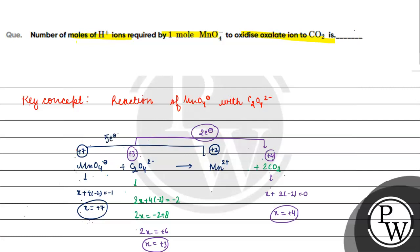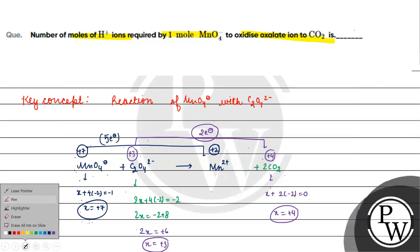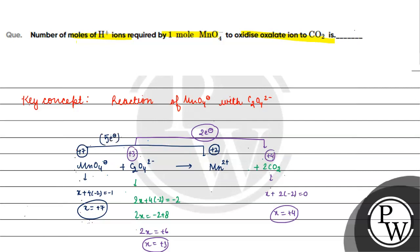The number of electrons in oxidation must equal the number in reduction. We multiply to equalize: oxidation gives 2 electrons (×5 = 10) and reduction gives 5 electrons (×2 = 10). So 10 electrons are involved overall.